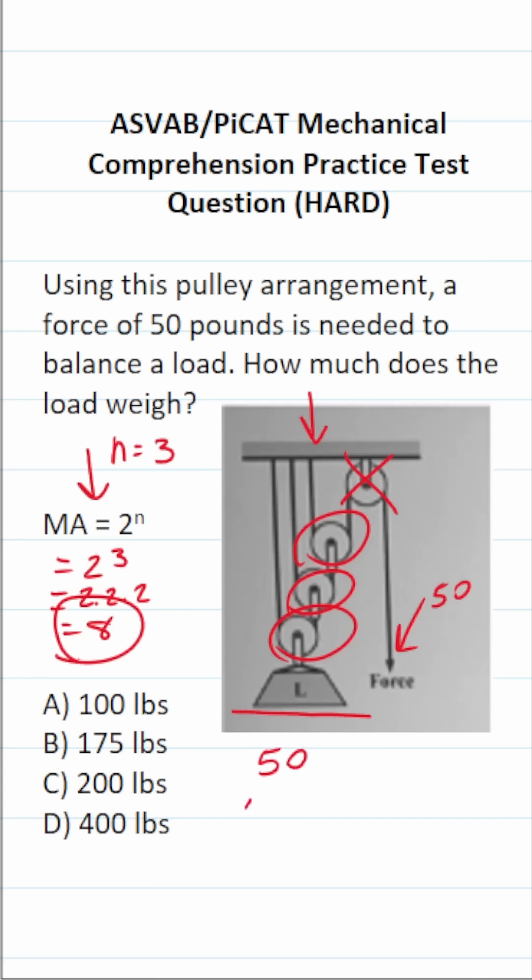This becomes 50 times 8, and let's work this out. 8 times 0 is 0. 5 times 8 is 40. In other words, our load must weigh 400 pounds in this case. So this one is D.